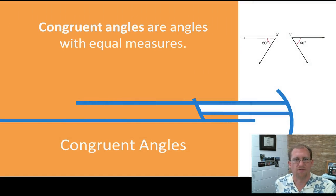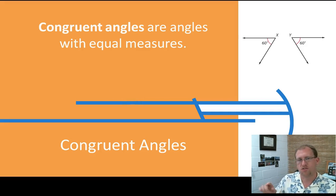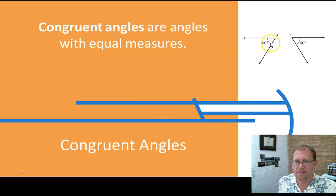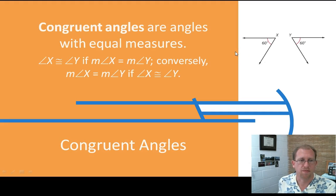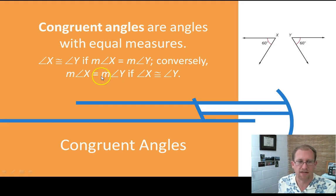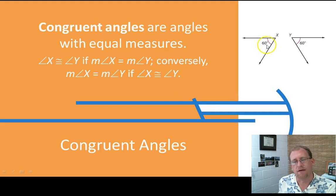Just like we have congruent segments, we also have congruent angles. If two angles are the same measure, then they are congruent. We use the same top-hat equal sign to represent congruent angles, and we put a little hash mark across the angle in diagrams to show they match. Angle X is congruent to angle Y if the measure of angle X equals the measure of angle Y — congruence and equality are very similar ideas.